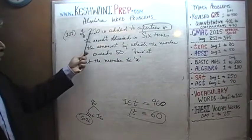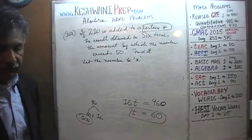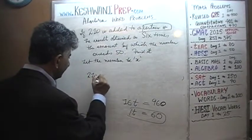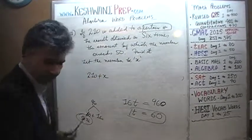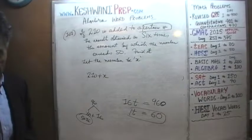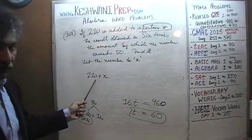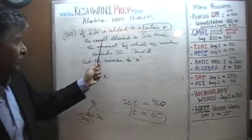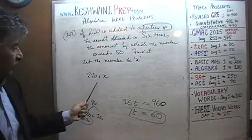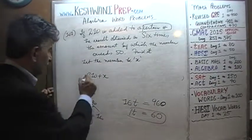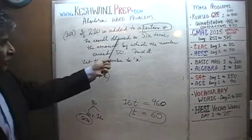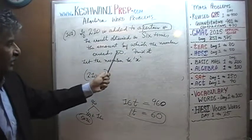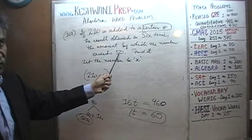If 210 is added to a certain number — let's do that — the result that we obtained is 6 times the amount by which the number exceeds 50.